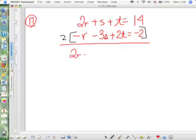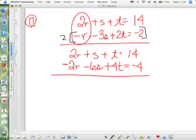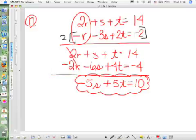The first equation did not change. The second equation becomes negative 2R minus 6S plus 4T equals negative 4. Because I'm going to eliminate R, so I want them to both be 2s. Now I have negative 5S plus 5T equals 10. I'm going to bubble this off. 2 times 2, positive 4, positive 5.